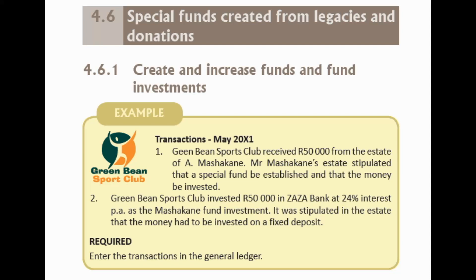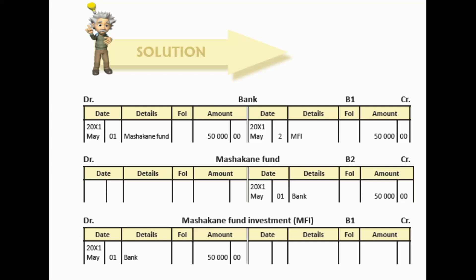So let's start with the first transaction. Green Bean Sports Club received $50,000 from the estate of A. Mashakani. Mr. Mashakani's estate stipulated that a special fund be established and that the money be invested. The first double entry we're going to do is when we receive the money from the estate. We debit bank because we receive money — bank is an asset that increases. So we debit bank and we credit the Mashakani fund account with $50,000.